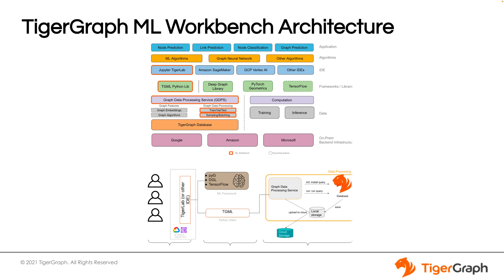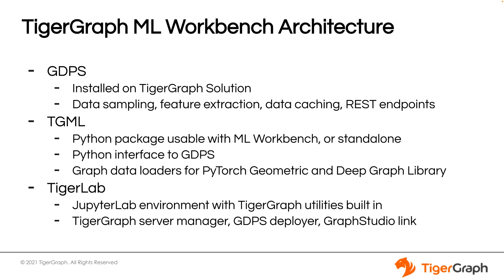Let's take a moment to talk about the architecture. At a high level, the Machine Learning Workbench consists of three main components: GDPS (the Graph Data Processing Service), TGML (TigerGraph Machine Learning Library), and TigerLab, a Jupyter Lab environment with custom TigerGraph plugins. The GDPS runs on the actual TigerGraph server itself and is responsible for the direct connection to the data, data sampling, feature extraction, data caching, and supplying REST endpoints for the TGML package to interface with.